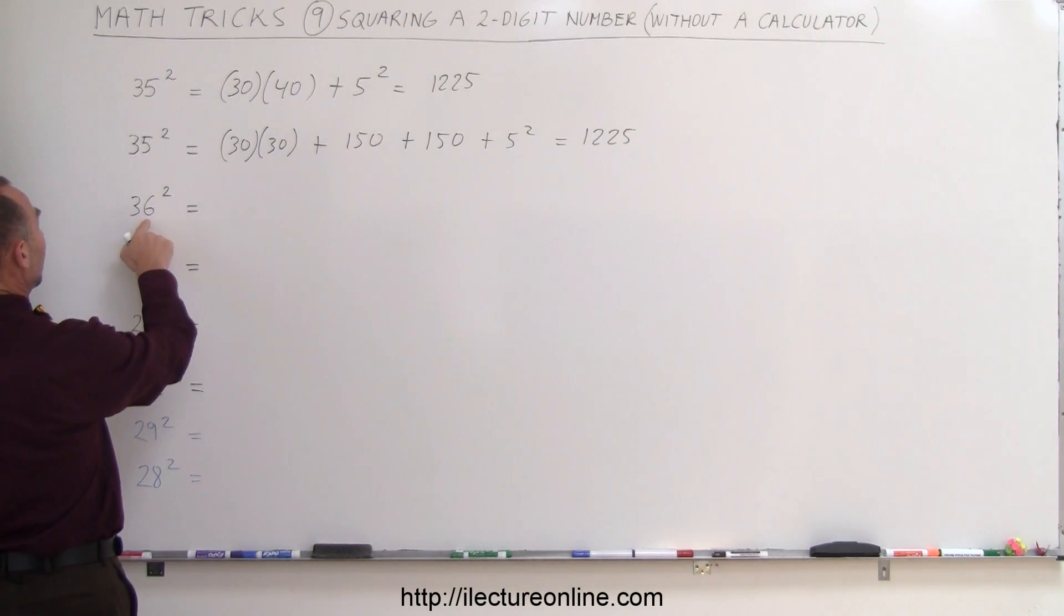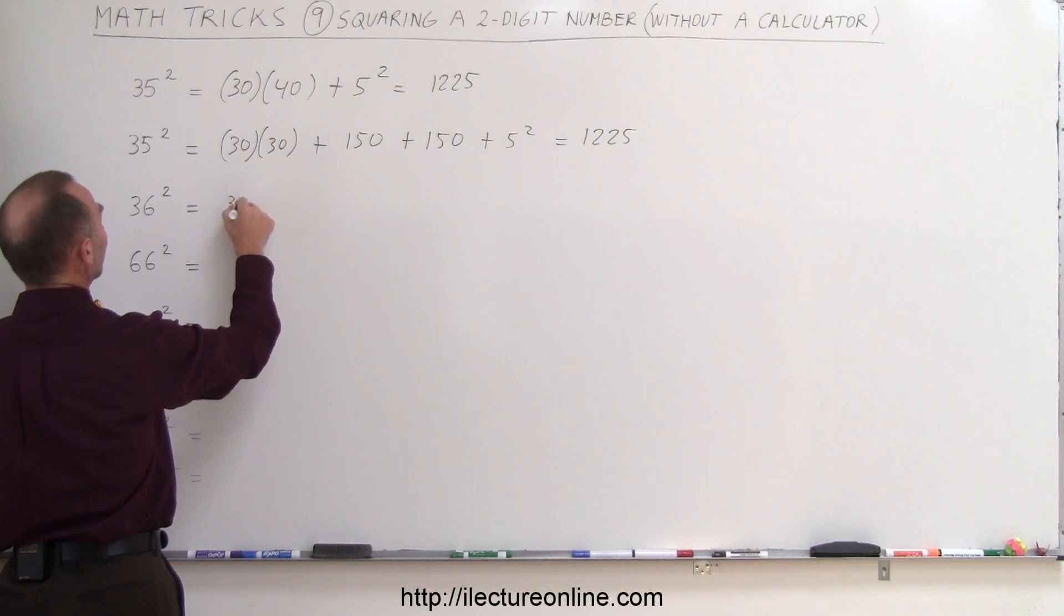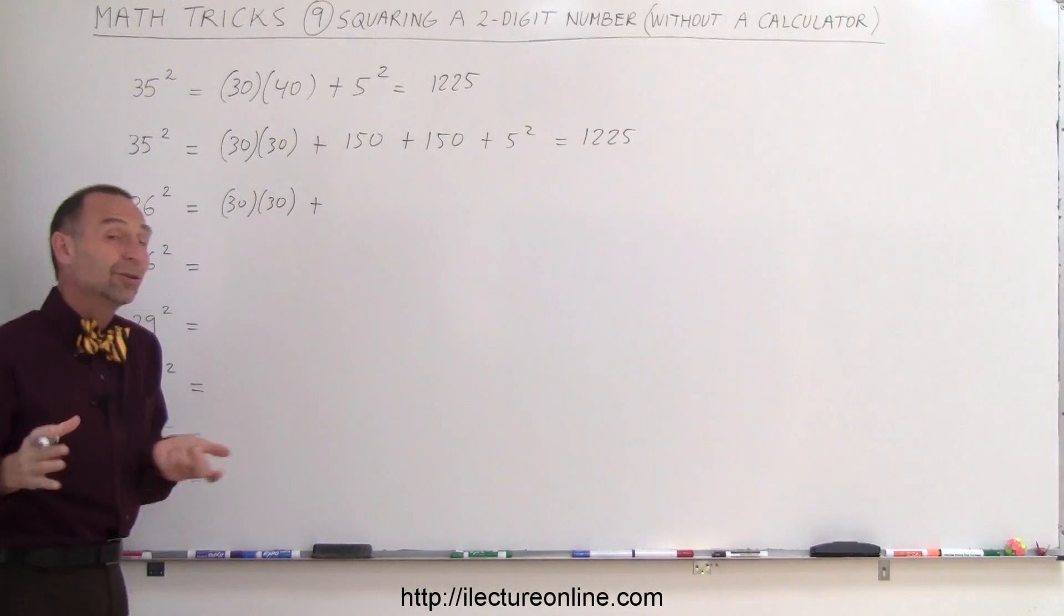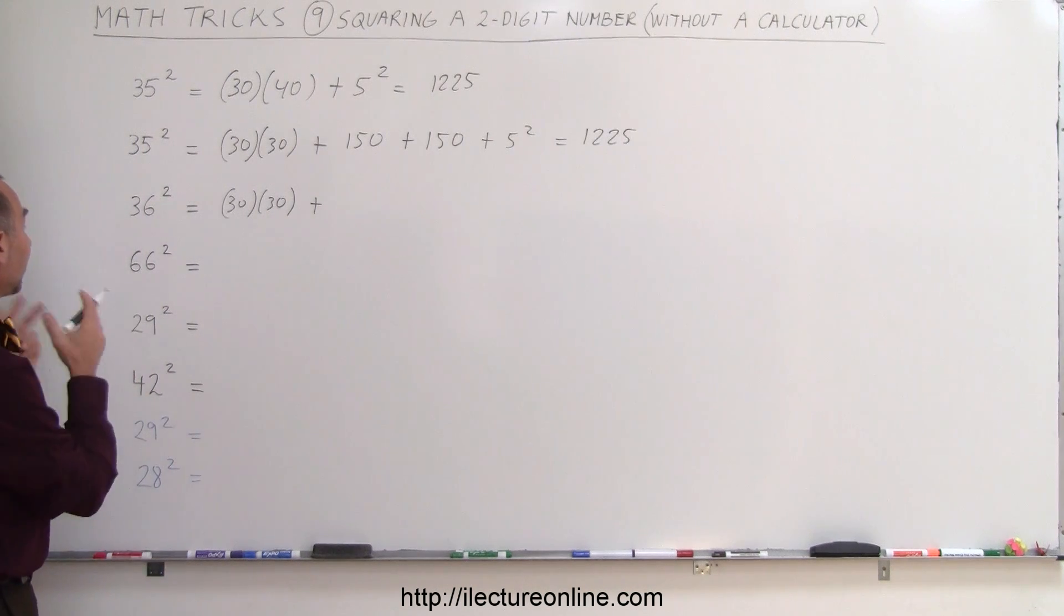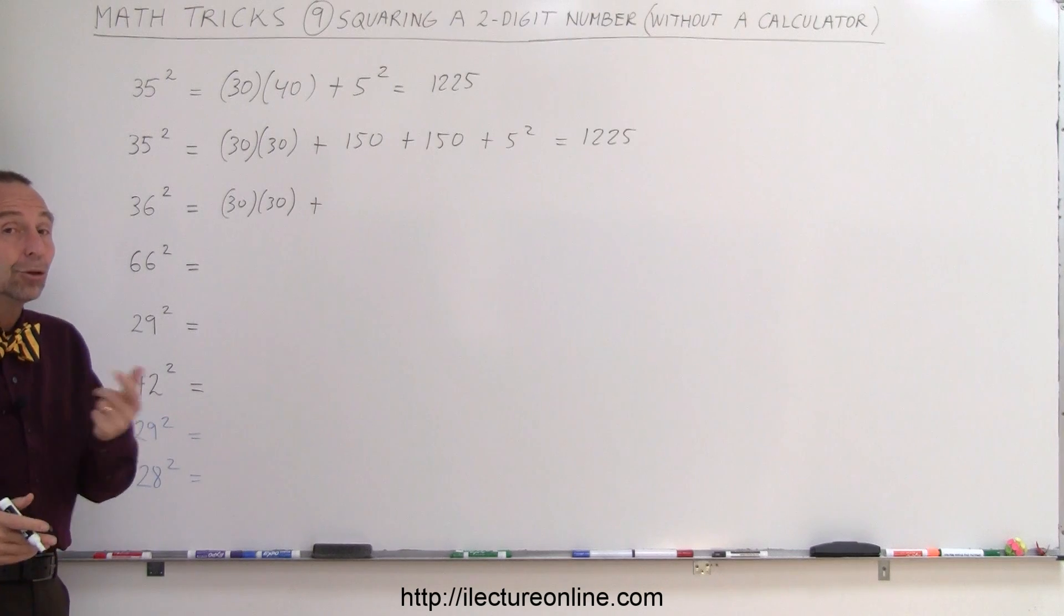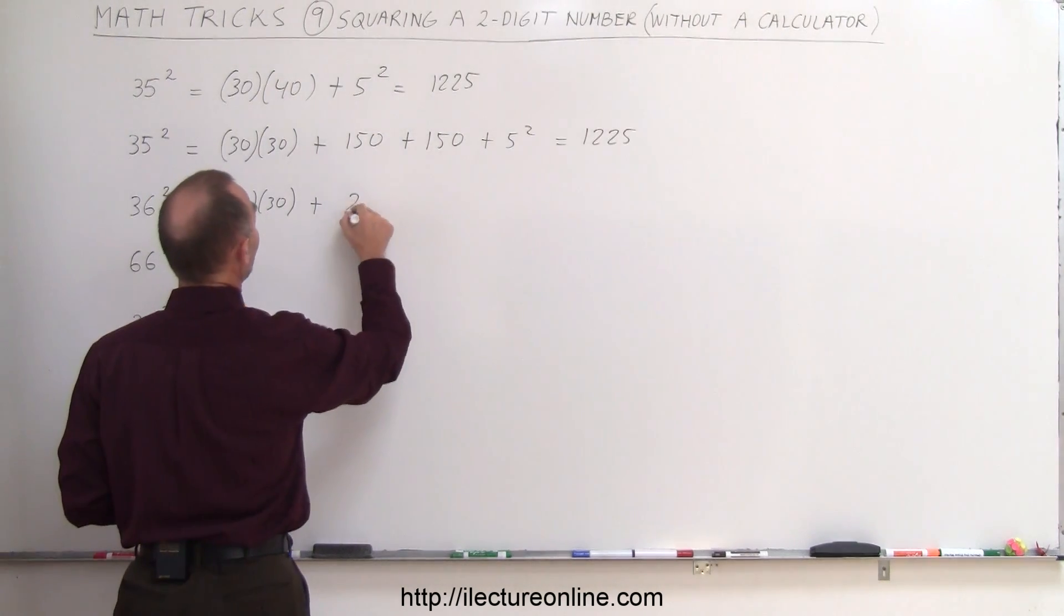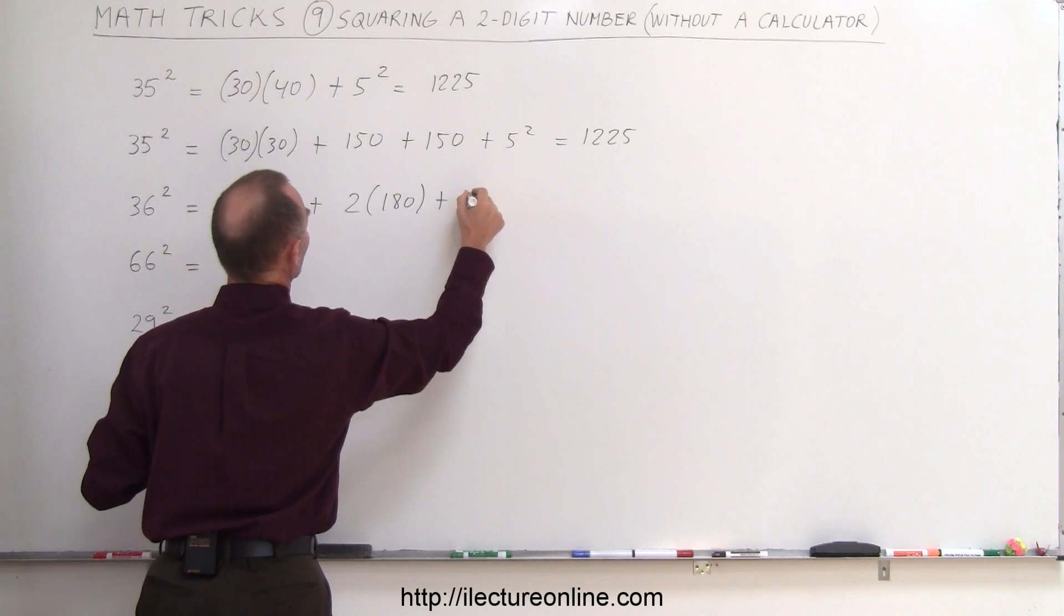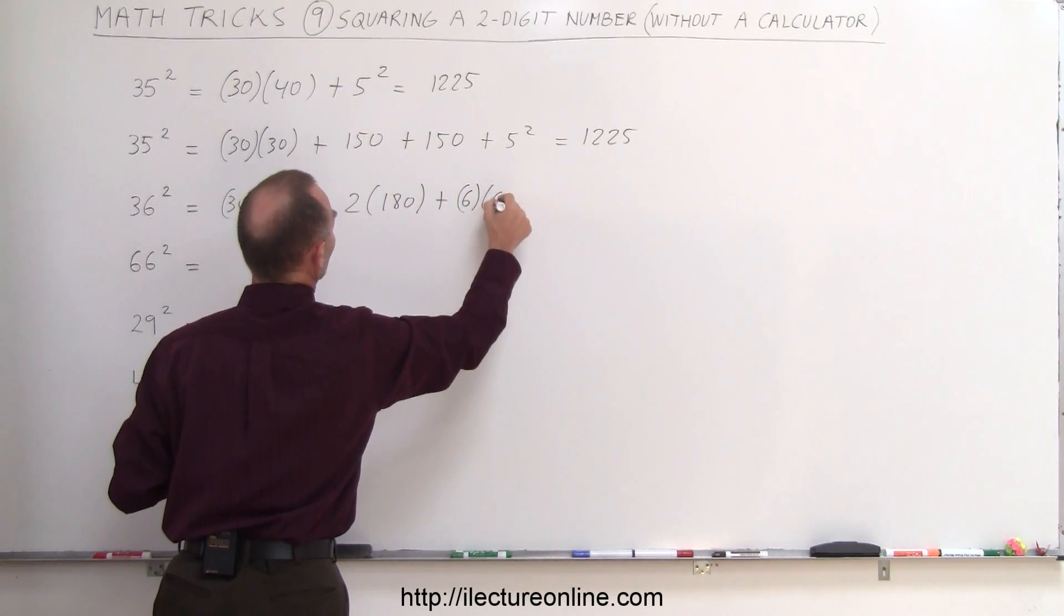Again, you take the first number, which is 30, you square it, so you get 30 times 30, which is 900, and you should be able to do that in your head, you don't need to write that down, you simply go, okay, that's 30 times 30 is 900, and then 30 times 6 is 180, and you do that twice, so plus 2 times 180, plus the last number squared, which is 6 squared, so 6 times 6, which is 36.